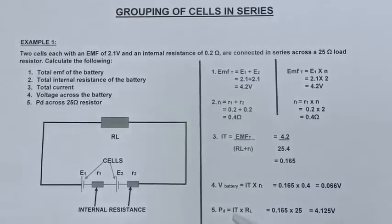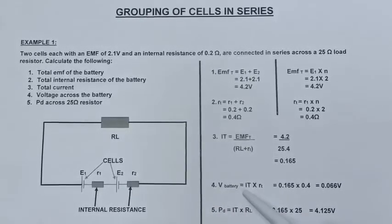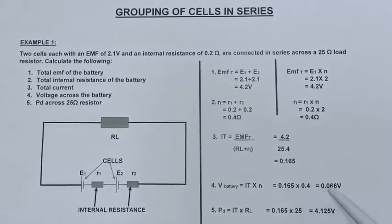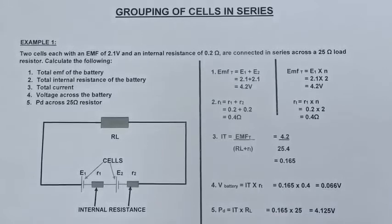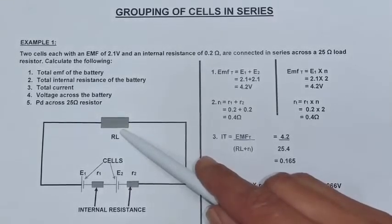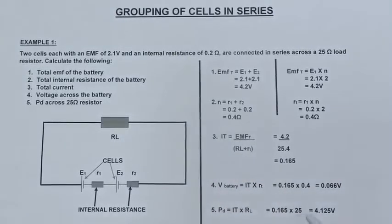Next I am going to calculate what is the voltage across the battery alone. To do that I use the formula: I total multiplied by only my internal resistances, and that gives me 0.066 volts. Lastly, I must calculate my potential difference, which is my total current multiplied by my load resistor, the 25 ohm resistor, and that gives me 4.125 volts.